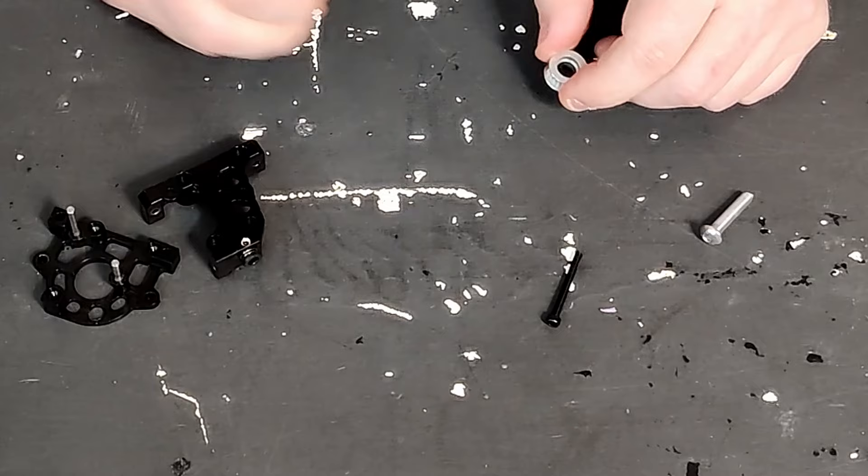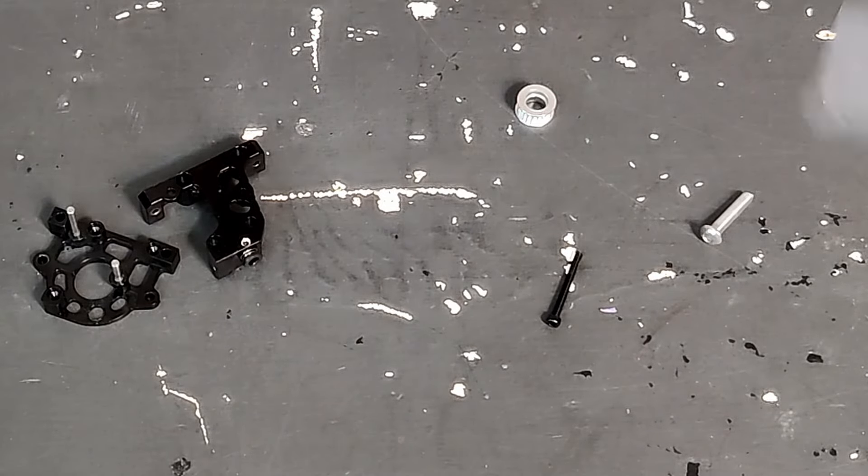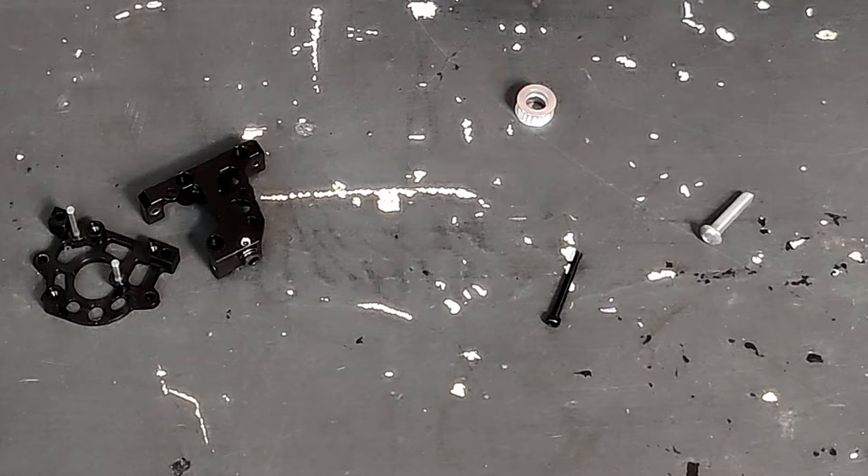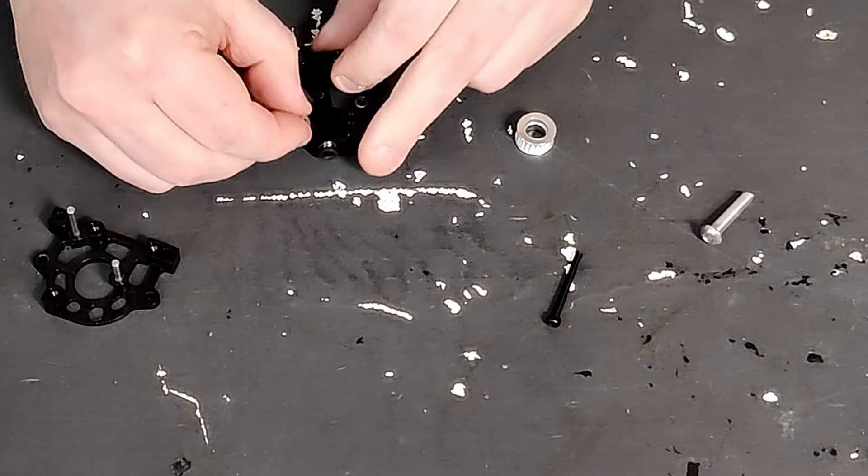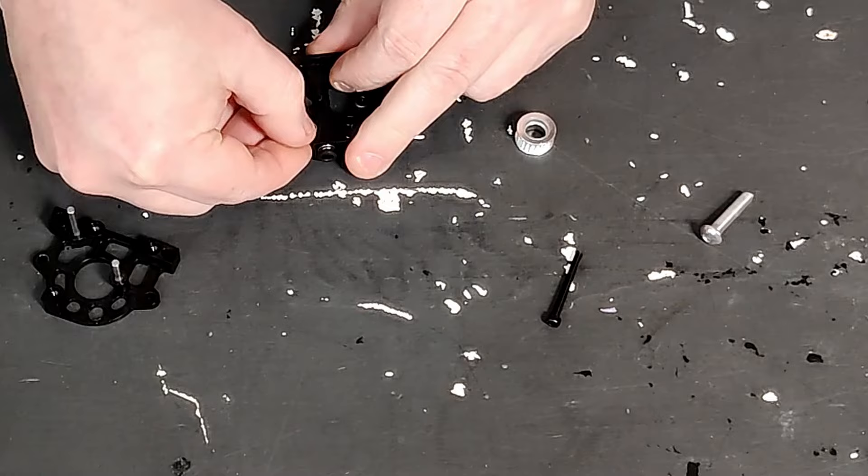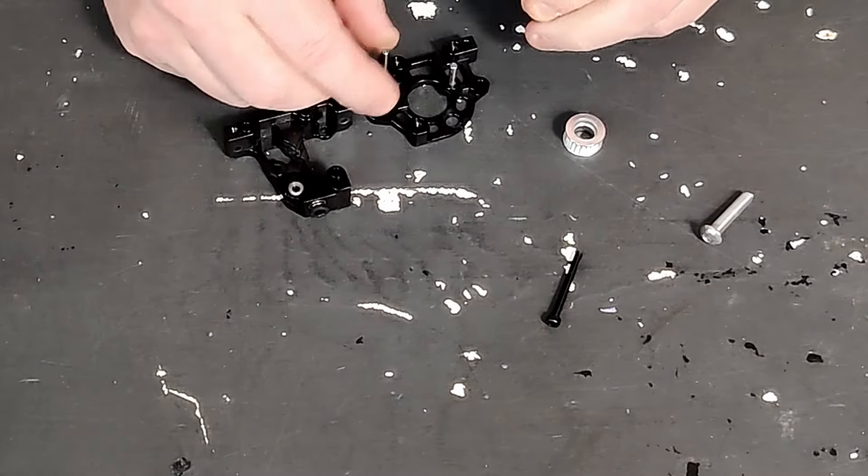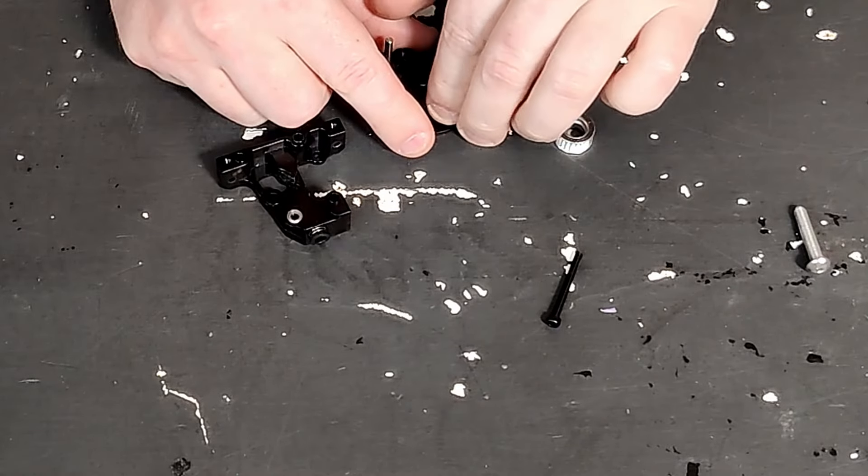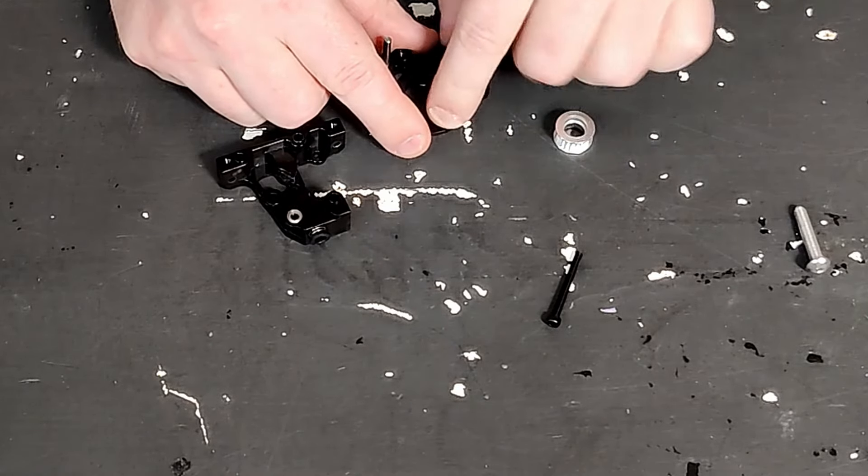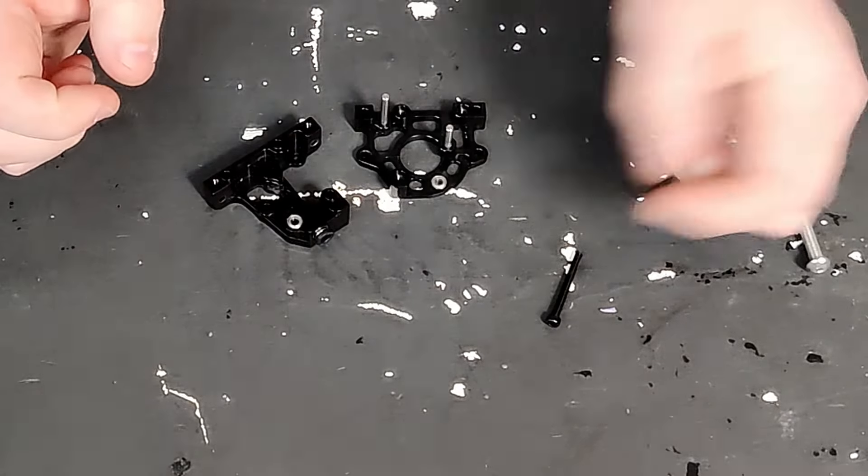And there we are. So now that we have our old bearings out we can put in the new ones. Putting them in is quite simple. Place them in, push them down. You might run into having to use a little bit of force but you should not need any tools to do this. This back one is the one that's giving me the most resistance but just pushing it in with my finger is all that it's going to take.